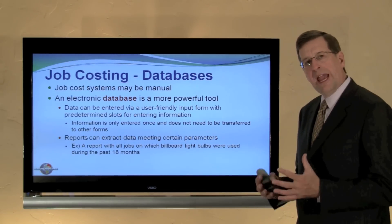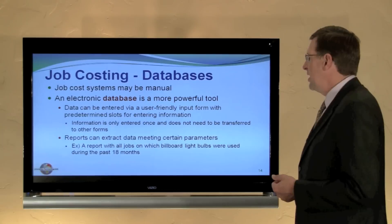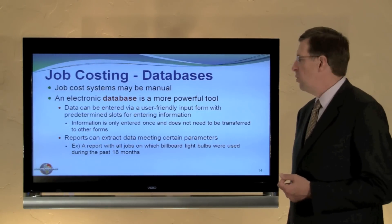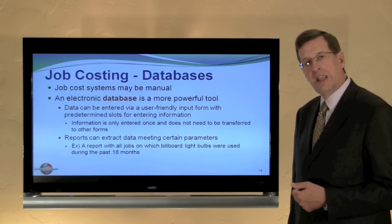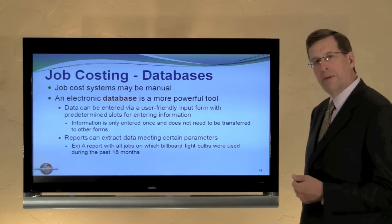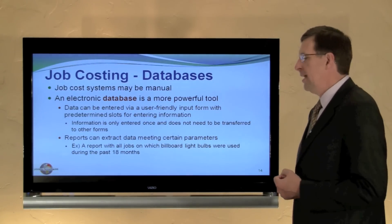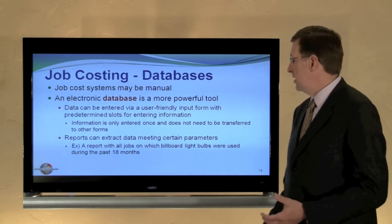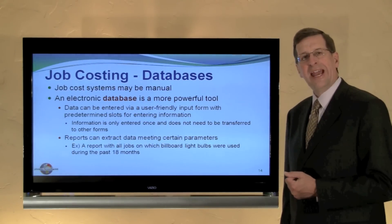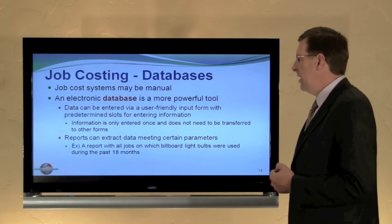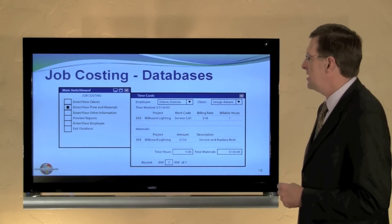I've shown a manual system for capturing costs into a job cost sheet, but we could use an electronic database, which is more powerful. Data can be entered via user-friendly input forms with pre-determined slots. The information is entered once, and then the computer allows you to sort and capture data. You could query not just the cost for Job A, but also how many light bulbs have been used in the last 18 months — data that would be hard to gather from a manual system.